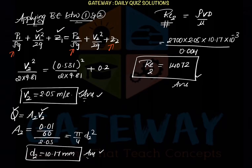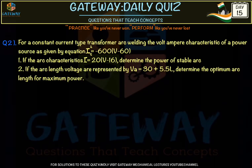Question 2: For a constant current type transformer arc welding, the volt-ampere characteristic of the power source is IT² = −600(V − 60). The arc characteristic is I = 20(V − 16). For stable arc condition, what is the power required? The second part asks: if arc length and voltage are proportional, determine the optimum arc length for maximum power.